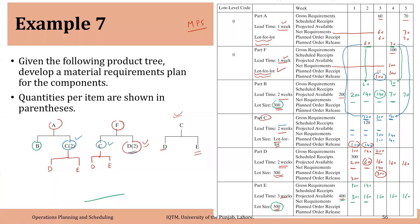The result of all this activity is the last row in each matrix — the planned order releases. We have planned order releases of 60 and 70 in weeks 2 and 4 for A; a planned order release of 100 for F in week 3; no planned order release for B; planned order releases of 100 and 140 in weeks 1 and 2 for C; a planned order release of 300 for D; and no planned order release for E. If you have any questions, you can ask. Thank you.